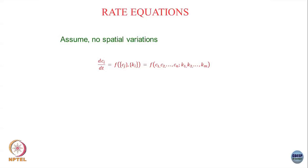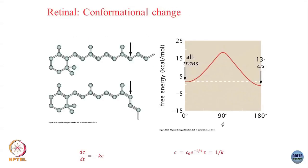If I have multiple species all interacting with each other, I can write down rate equations like this: dc/dt, the rate of change of concentration, will in principle depend on the concentrations of all other species that it interacts with and various rate constants.